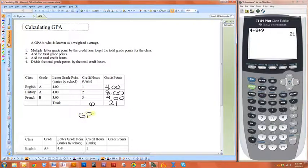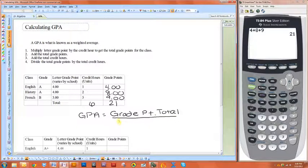To find your GPA, you do grade point total divided by credit hour total.